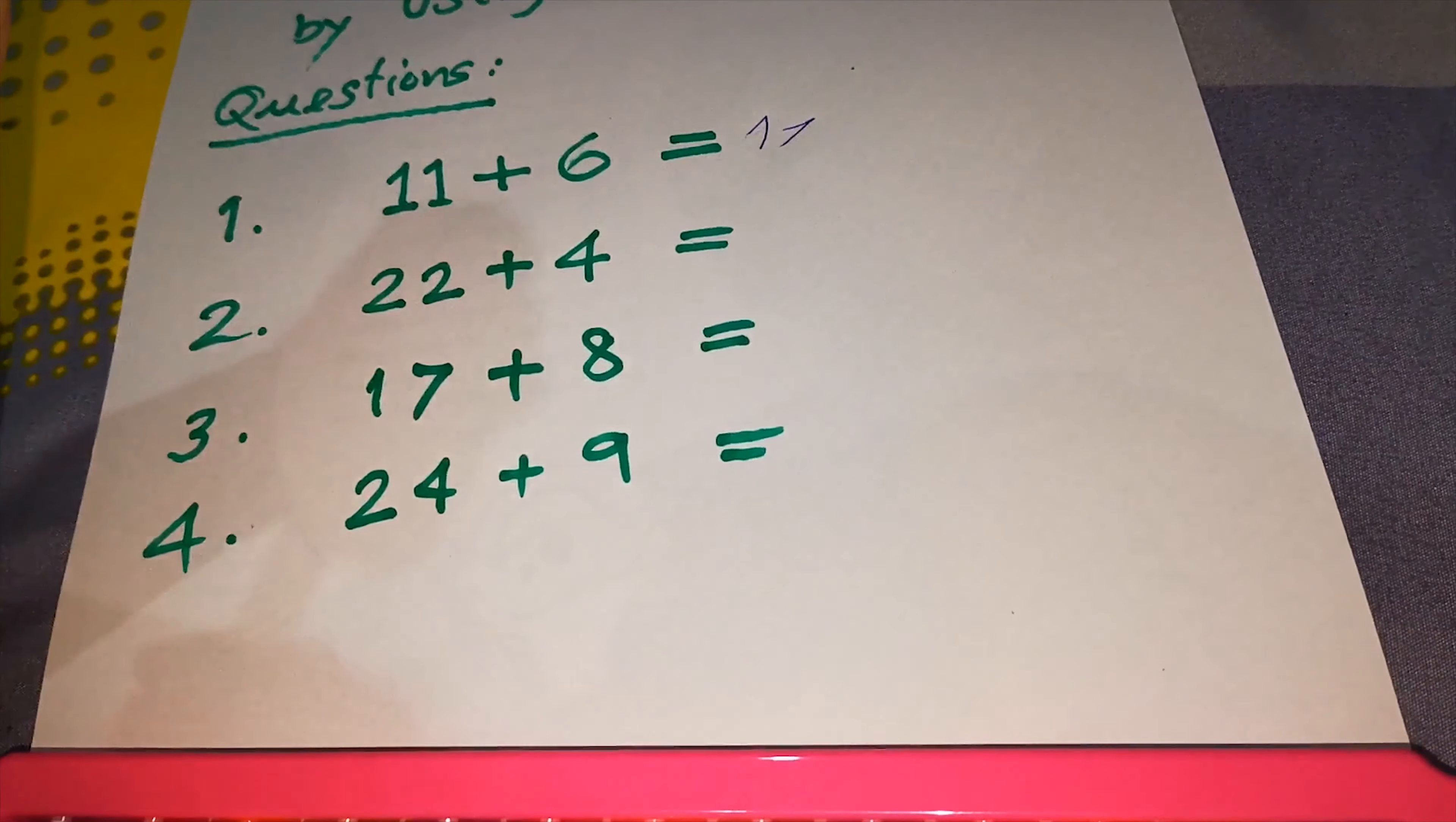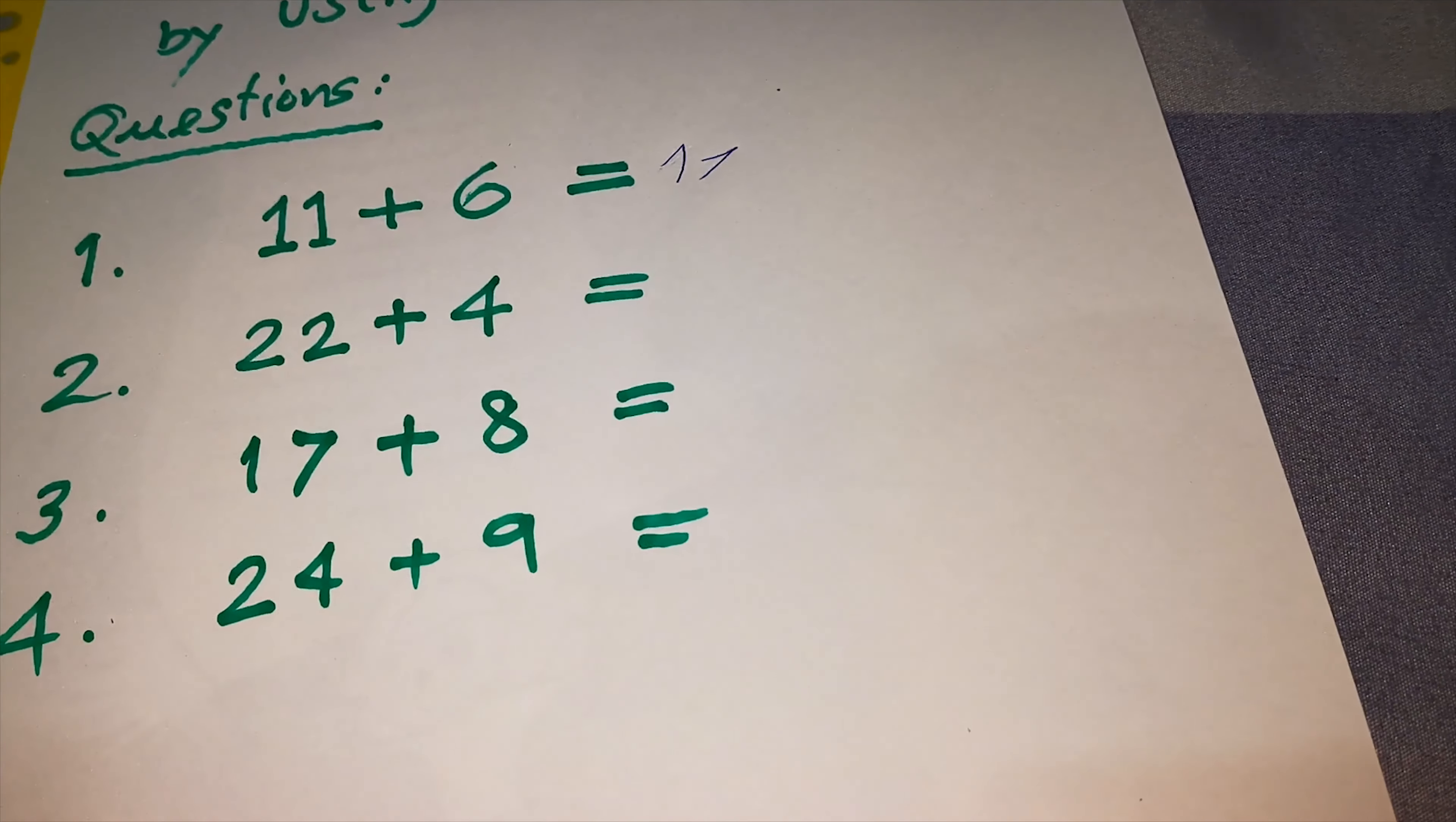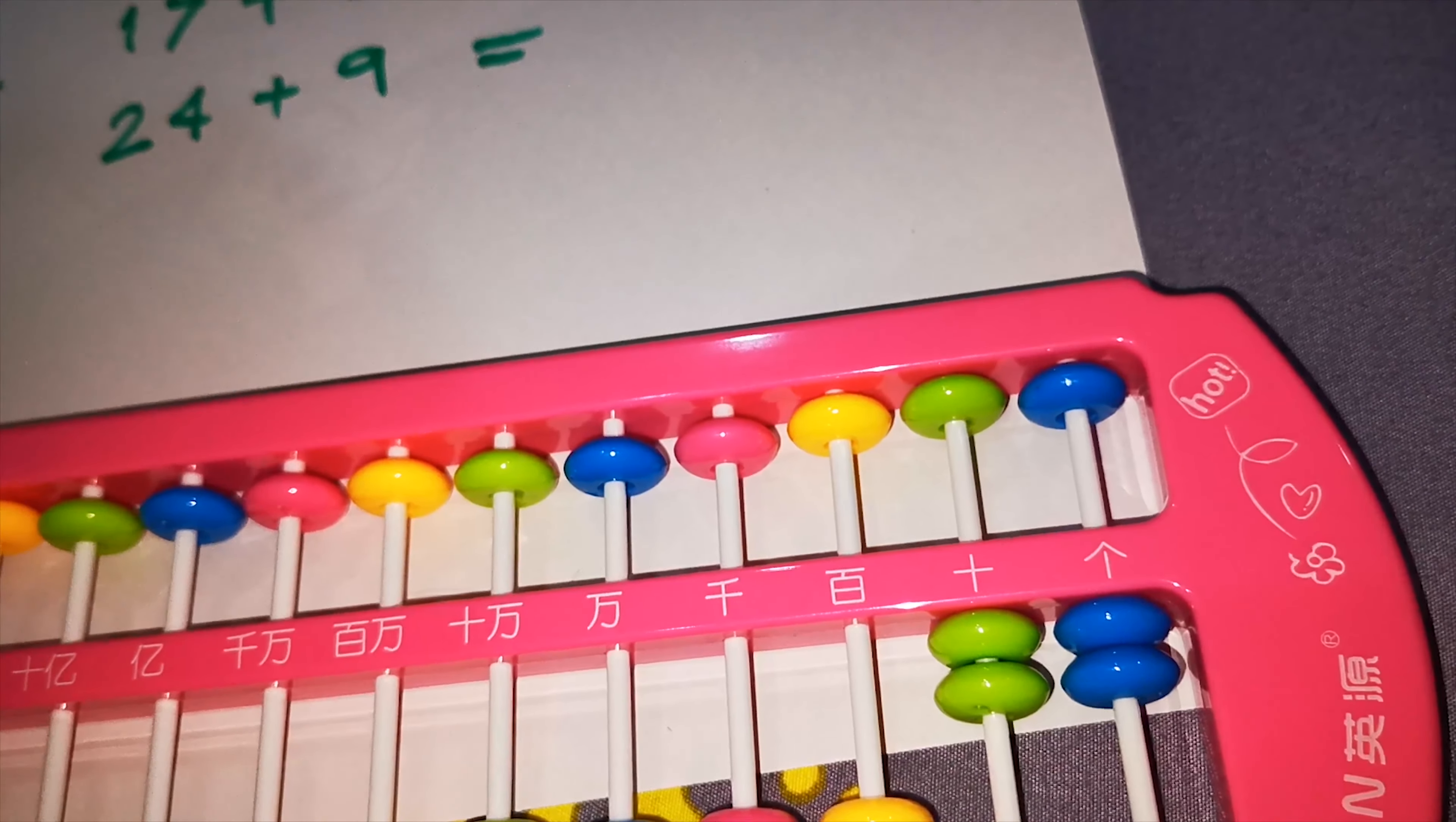Next, equation number 2: 22 plus 4. Add 20 and add 2 equals 22. How about 4?